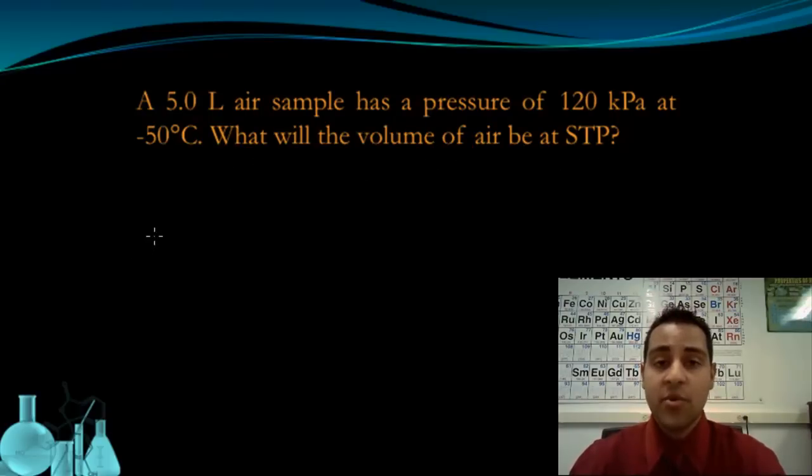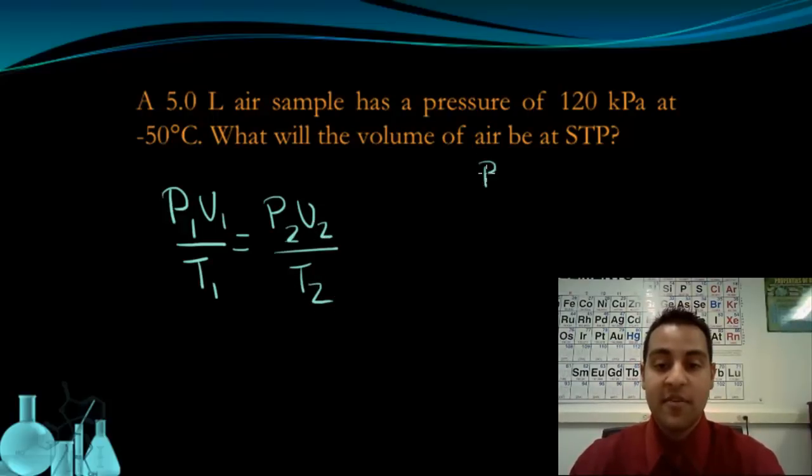So the first thing that I'm going to do is write out my equation to show the work that I'm going to do: P1 V1 over T1 equals P2 V2 over T2. So like normal, when I have an equation like this, I'm going to set up my variables and identify what they are. The initial pressure, it tells me, is 120 kPa. So 120 kPa is my P1. My initial volume is 5 liters, so V1 is 5.0 liters.